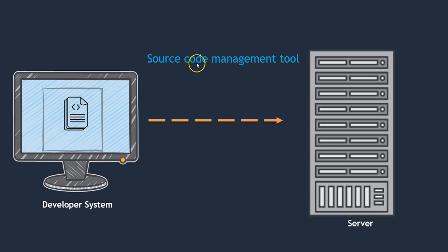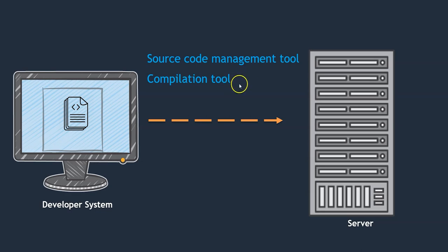We have the code, but we need to compile it — code cannot be directly understood by your server. The server can only understand system-understandable language, so we need to compile it. We need a compilation tool. Once compiled, we need to do testing as well, so to manage compilation and testing appropriately, we need an integration tool. If everything is working fine, we need to deploy it. For multiple deployments, we need a deployment tool.